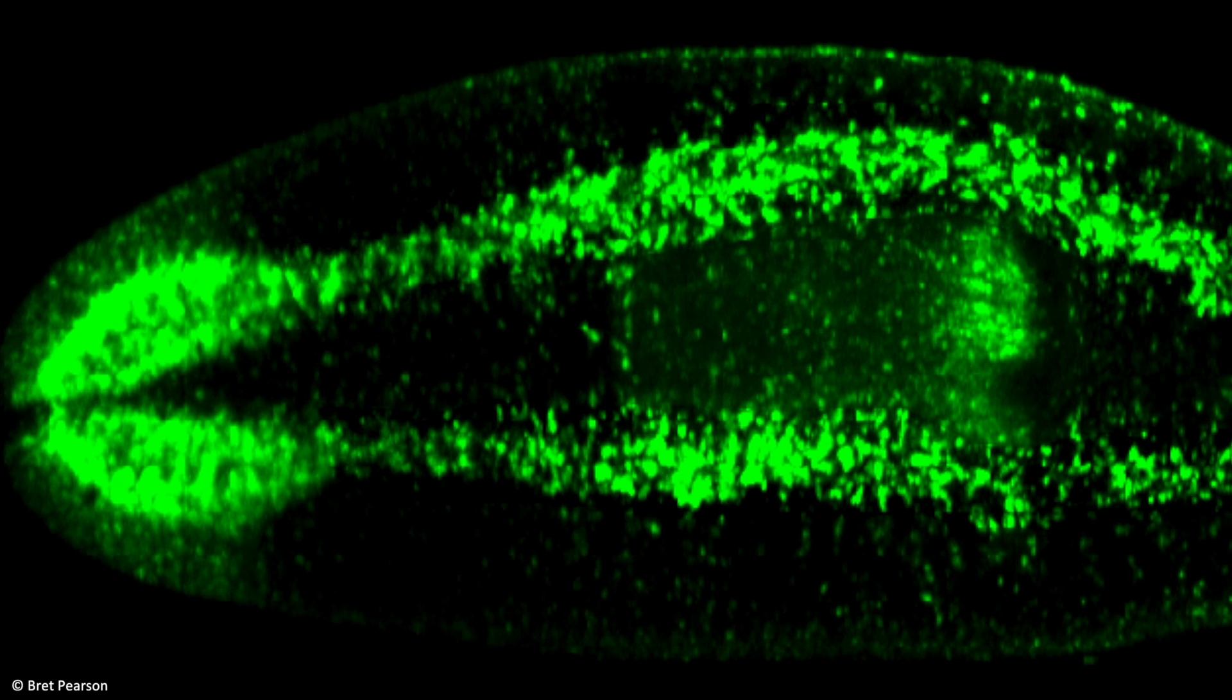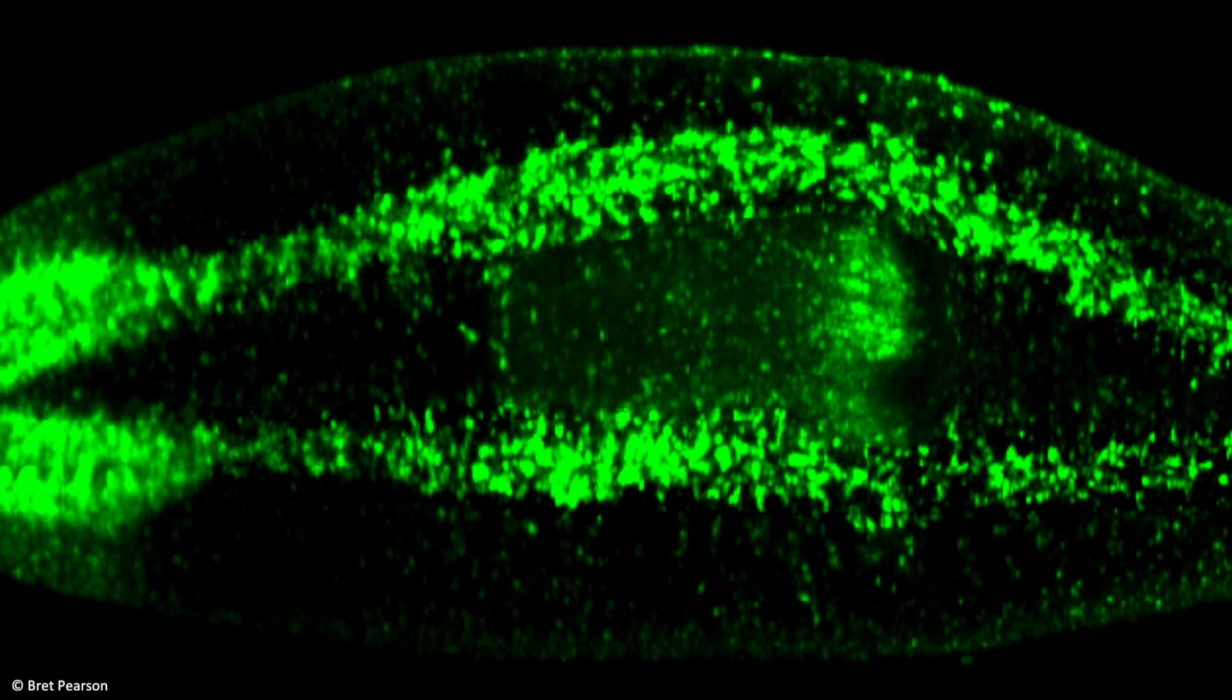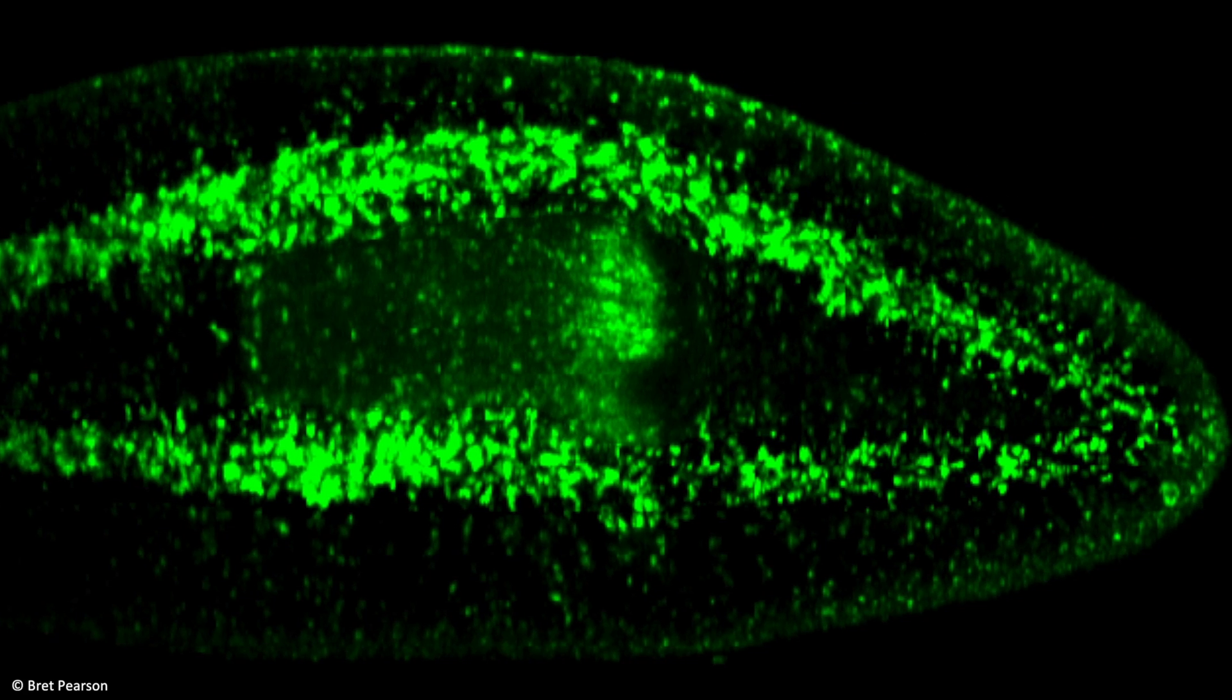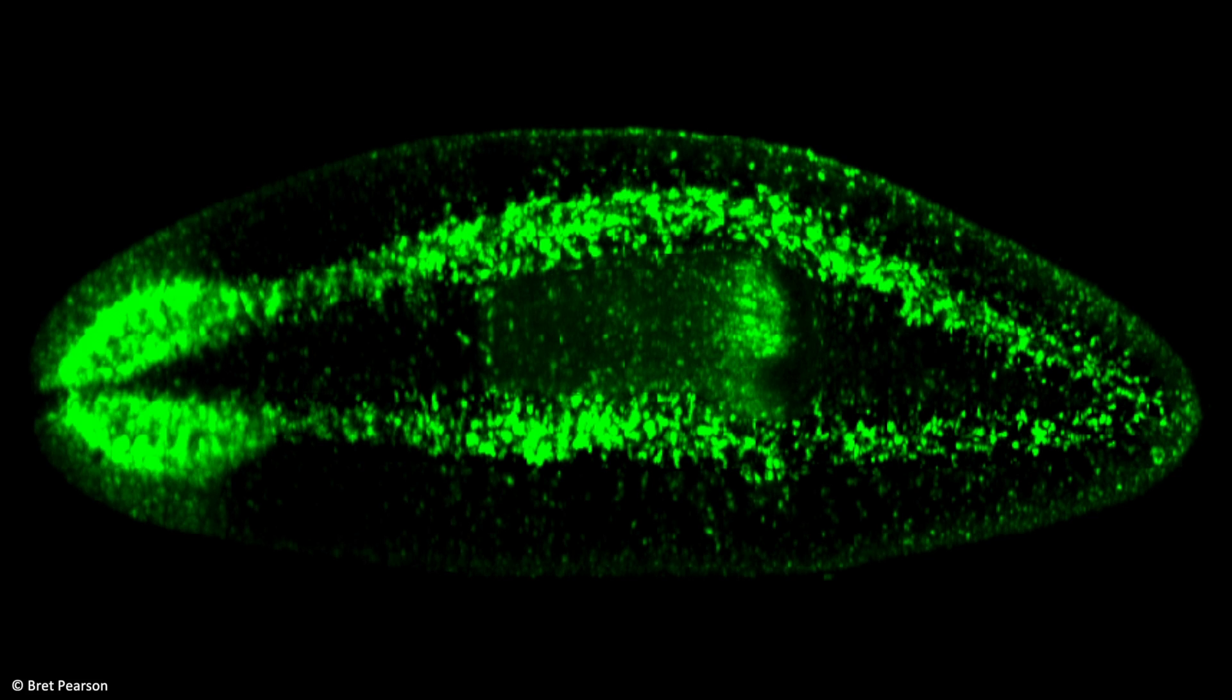Alternatively, you can use a fluorescent detection method. And this is called fluorescent in situ hybridization, more commonly abbreviated as FISH. So here's a really nice example of FISH for a gene expressed in the central nervous system of an adult planarian.